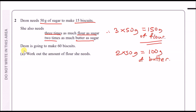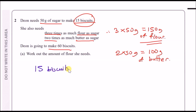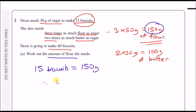Dean is going to make 60 biscuits and we need to work out the amount of flour she needs. We know 15 biscuits requires 150 grams of flour. Since 60 biscuits is four times bigger than 15, we multiply: 4 × 150 = 600 grams of flour.